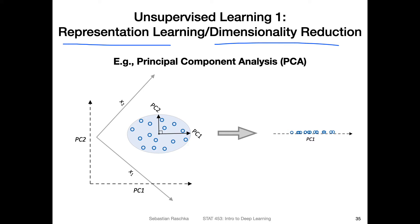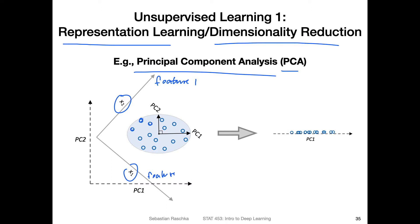You've probably heard of principal component analysis, or PCA, in statistics classes. It's a linear transformation technique that rotates the data and extracts linear combinations of the inputs. Consider this example: there are two features, feature one and feature two — these are our inputs, and the circles are data points in this space. With principal component analysis, we find the eigenvectors of this dataset, and we use those eigenvectors to rotate the data.